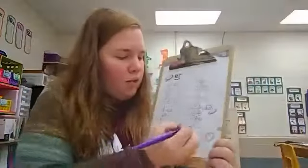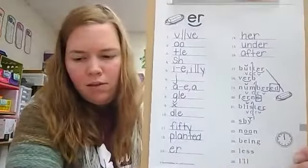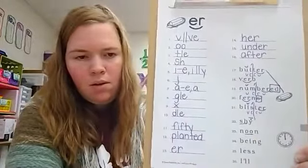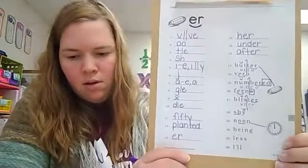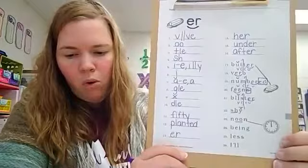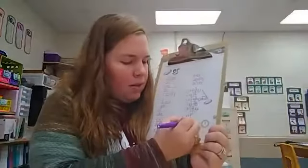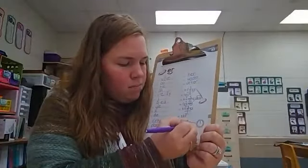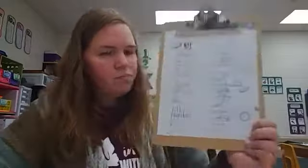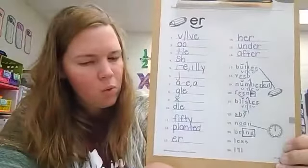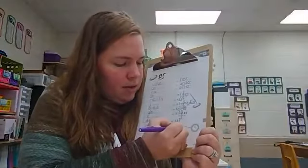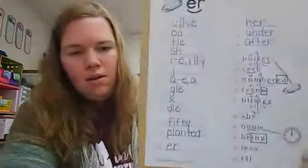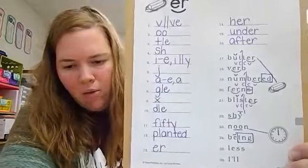Number 23, digraph O-O needs underlined. This word is noon, which is the time shown on the clock. Noon. And number 24 has suffix ending I-N-G. Put a box around it. So we're left with the root word B. E needs a macron since it is a long vowel sound.